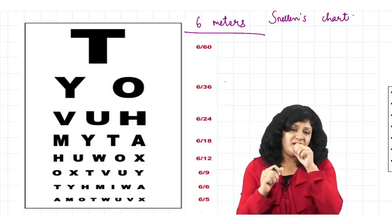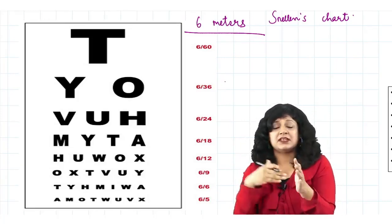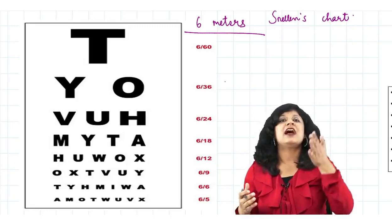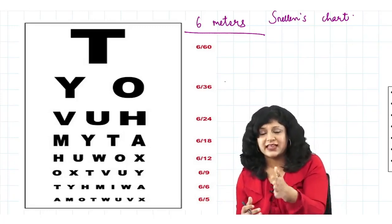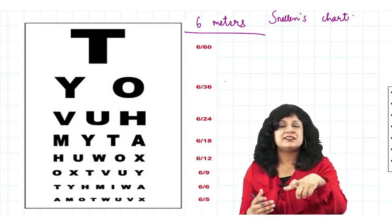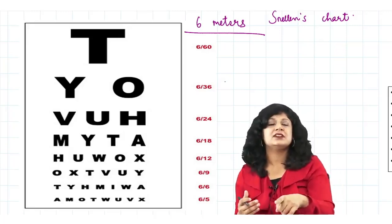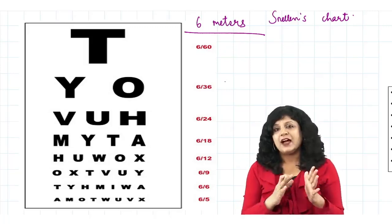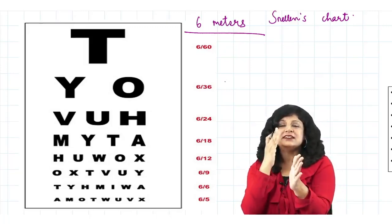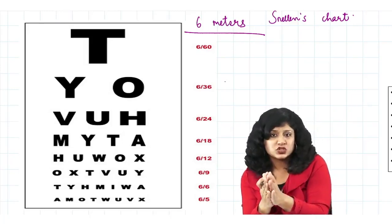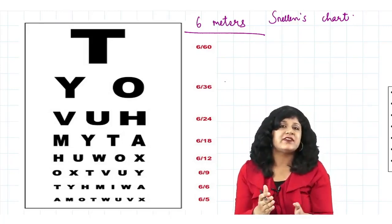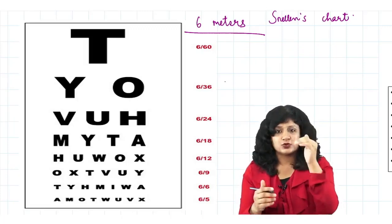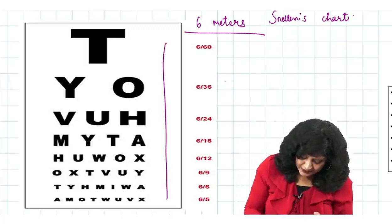Practically it is very difficult to keep a room large enough, especially today when land is costly, so keeping the OPD large enough for 6 meters is hard. What we do practically is take a distance of 3 meters and then use a mirror — 3 meters real distance plus 3 meters fictional distance ultimately equals 6 meters. So anyhow, the patient is standing at a distance of 6 meters from the Snellen's chart, starting from the topmost letter going lower.